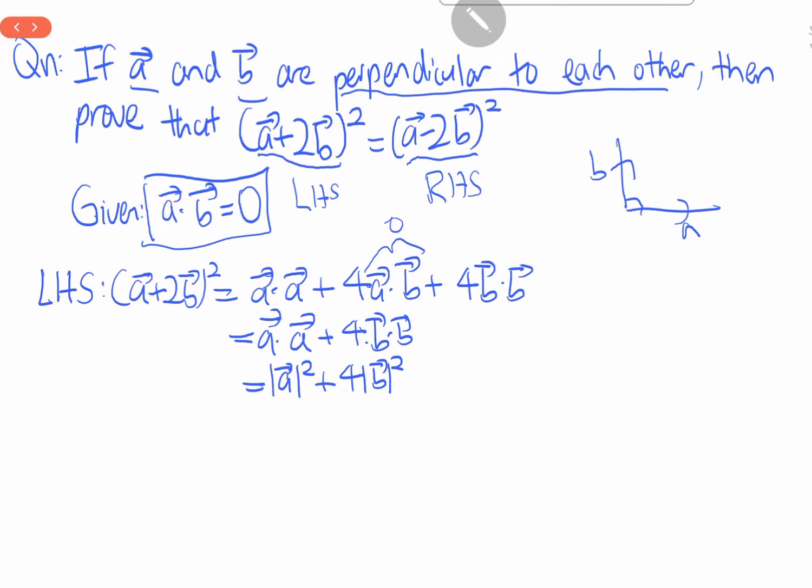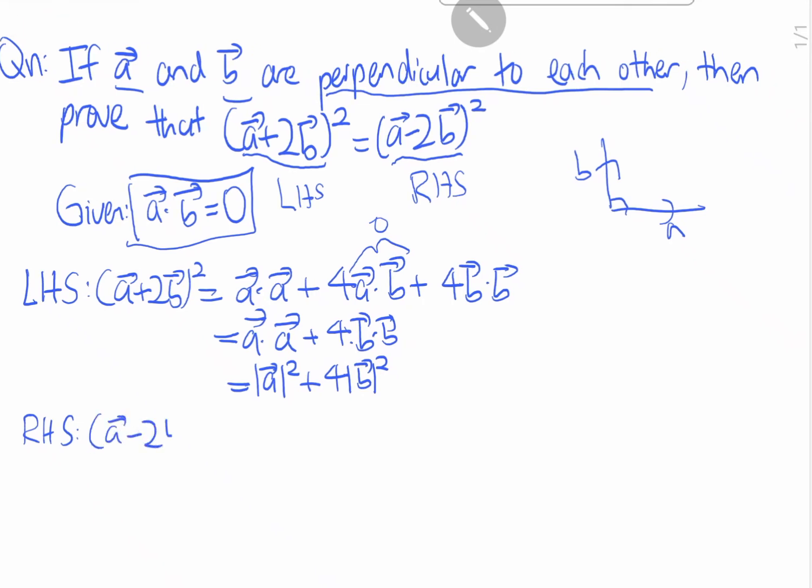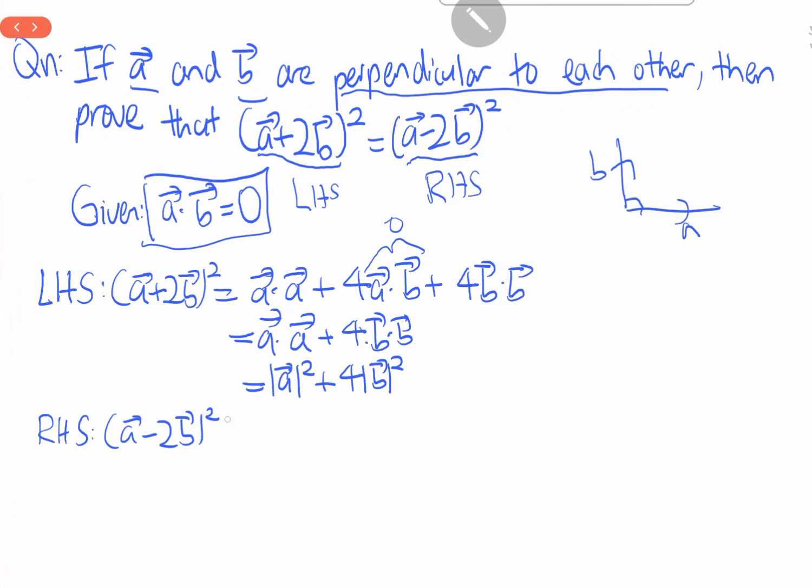Similarly, for the right hand side, a minus 2b square equals to a·a minus 4ab plus 4b. As you know, this will go to 0. We get a dot a plus 4b times dot product of b, we get a square plus 4b square,